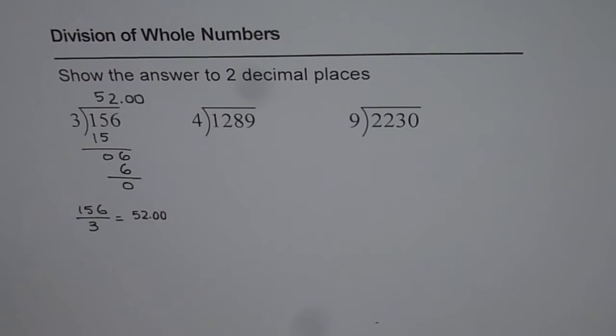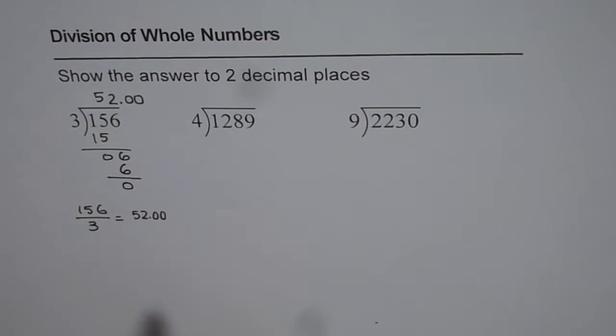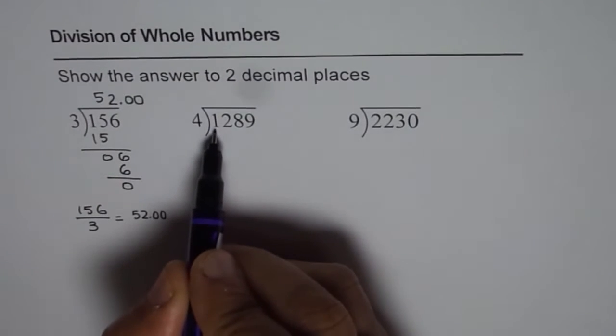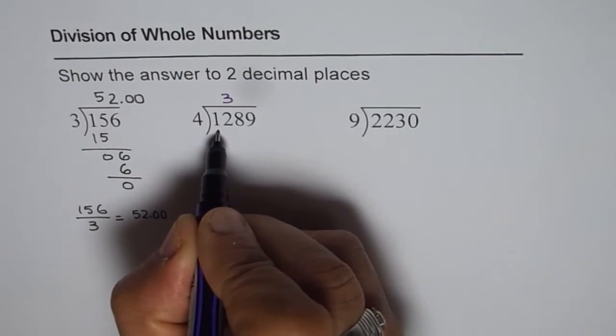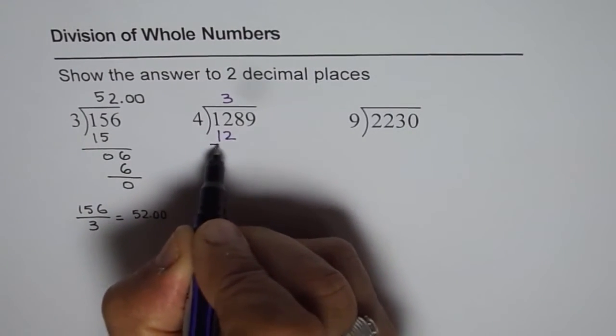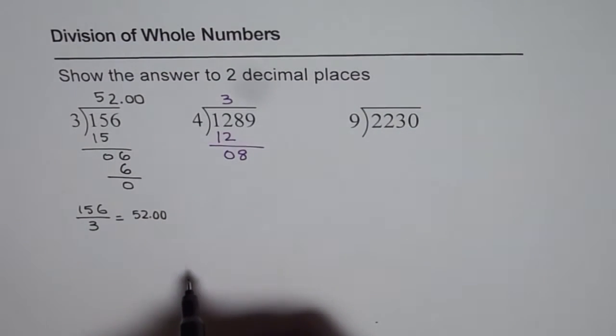Next one, we will divide 1289 by 4. I have taken very simple examples - the idea is to understand the concept. You cannot divide once, you take the next number also. 12 divided by 4, you know it should be 3. So 4 times 3 is 12. When you take away you get 0. Bring down the next number which is 8. 4 times 2 is 8, so there is also 0.